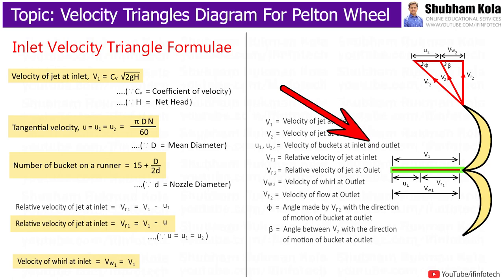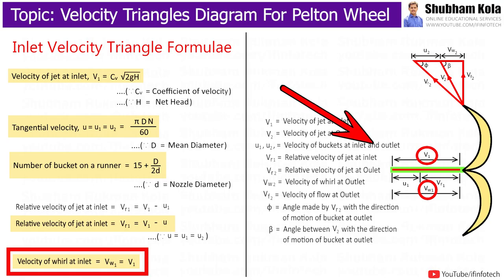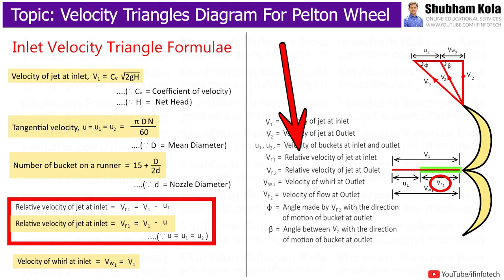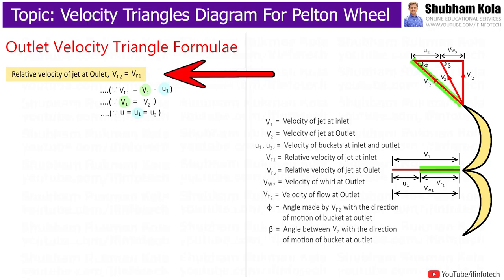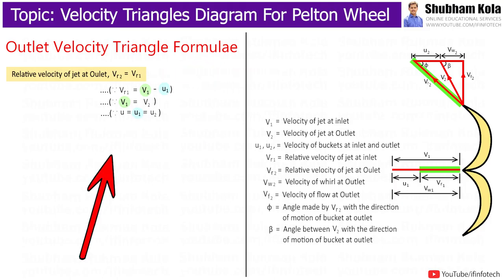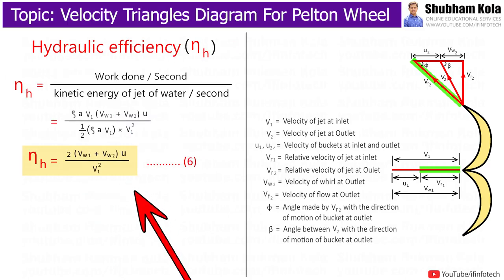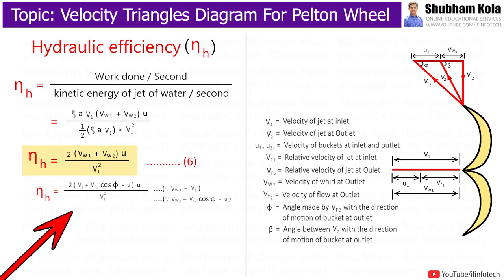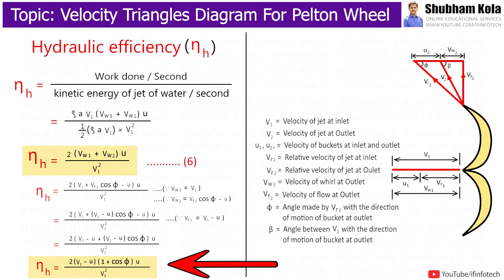This gives us the formula for hydraulic efficiency of the Pelton Wheel Turbine, Equation 6. From the velocity triangle at inlet, Vw1 = V1 and Vr1 = V1 − U1 = V1 − U. Since Vr1 = Vr2, we have Vr2 = V1 − U. Substituting the values of Vw1 and Vw2 into Equation 6 and simplifying, we obtain hydraulic efficiency η_h as Equation 7.